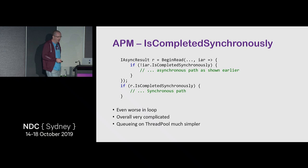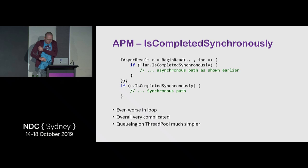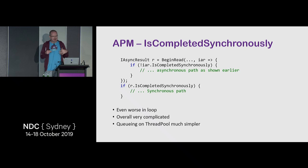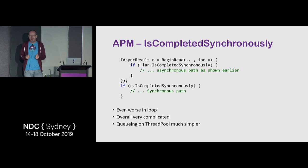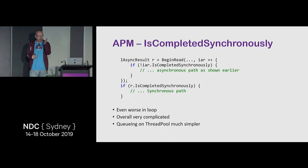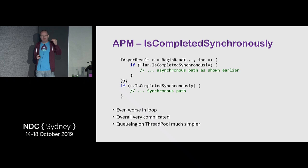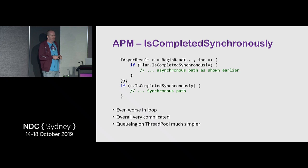There's another problem: imagine a MemoryStream where data is always available immediately. If you have this complicated loop and always take the synchronously-completed path, you end up with recursive callbacks — recursive calls because each step calls the next. After roughly 10,000 recursive calls, you'll get a stack overflow. So that's yet another thing to worry about.